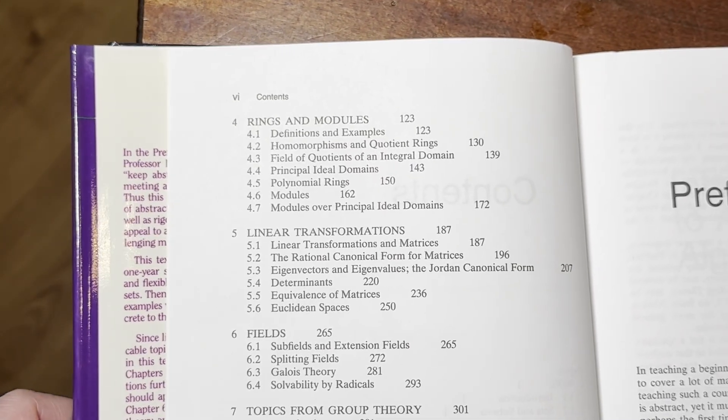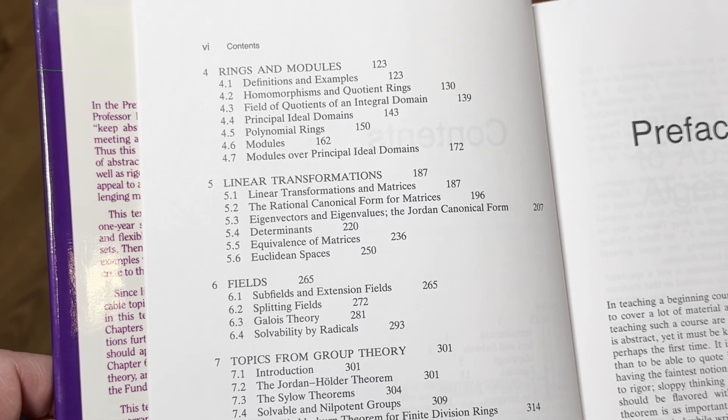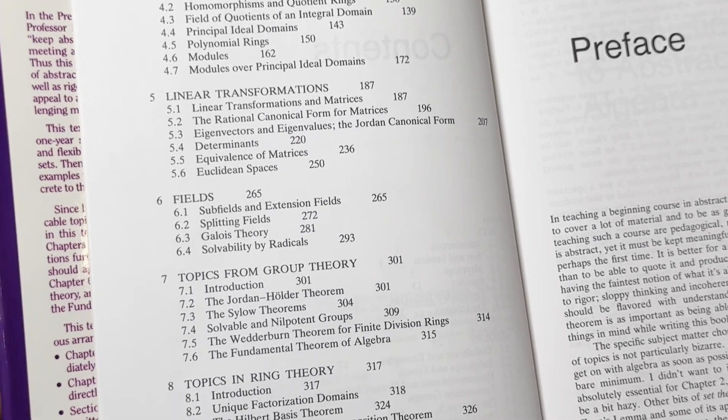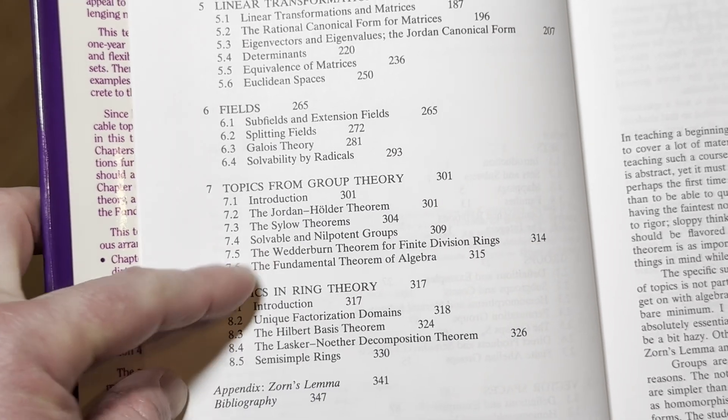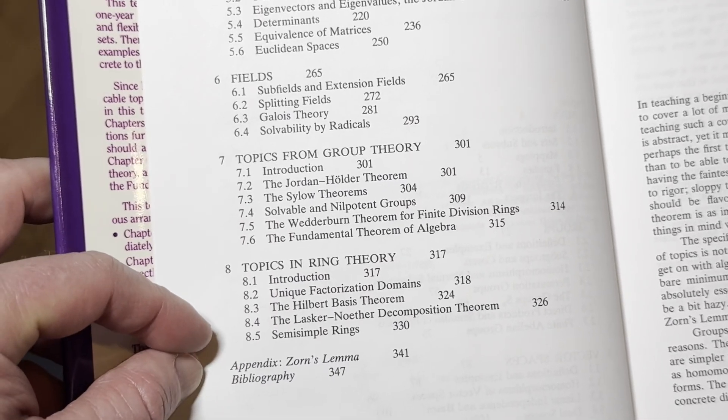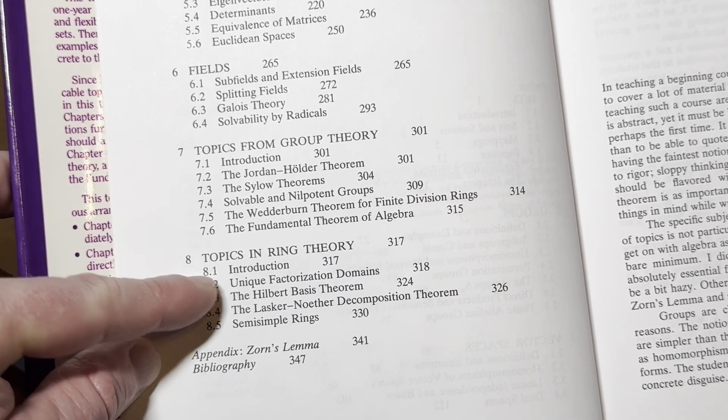Rings and modules. That's kind of fun. Linear transformations. Then we've got some fields and then some topics from group theory. Yeah, there we go. Sylow theorems. I was looking for those. And then topics in ring theory. Cool. We've got UFDs. Unique factorization domains.